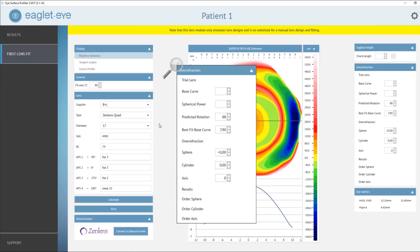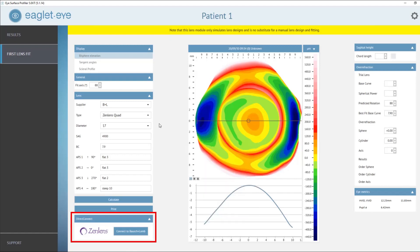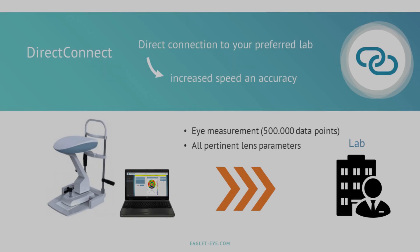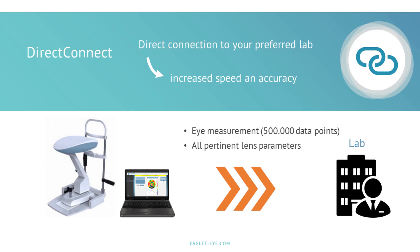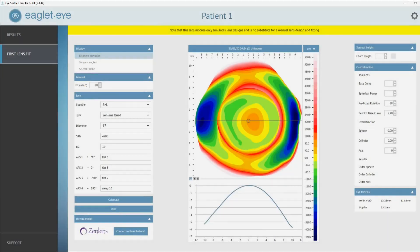When placing the lens order, a new feature we offer is Direct Connect — a way to push all the relevant parameters and data to the lab. They will receive that in all its richness, and for the consultation they provide, they will be empowered with all the information the ESP gives. You essentially have a very direct and smooth process for a fast, efficient, and precise fit.